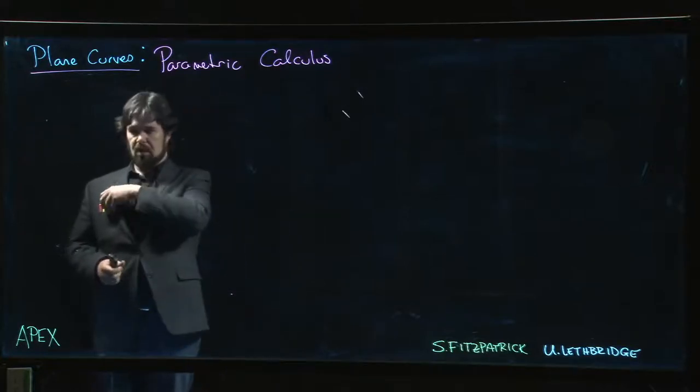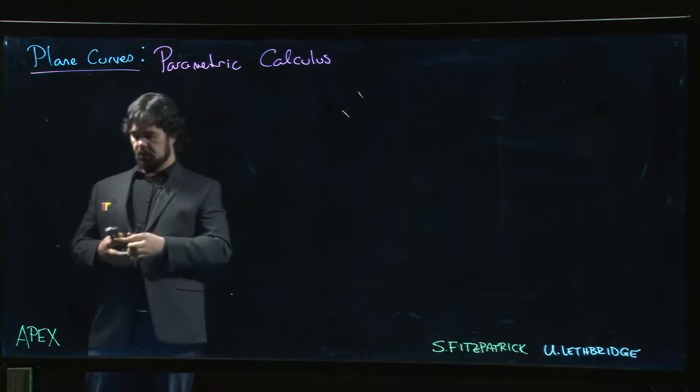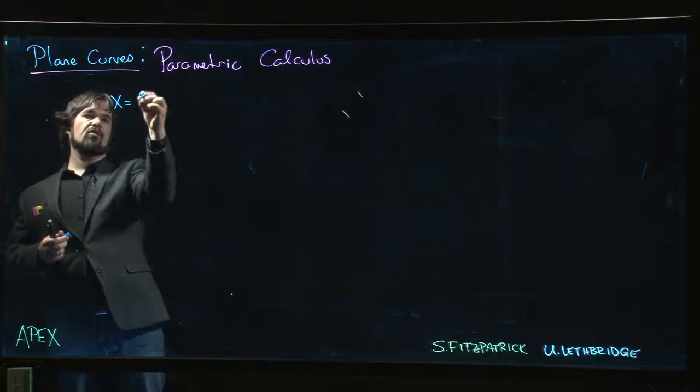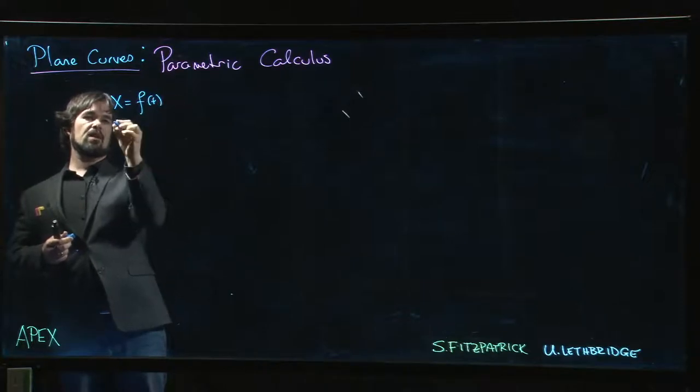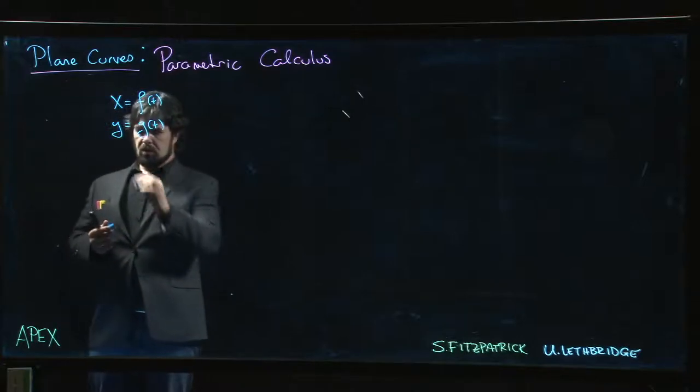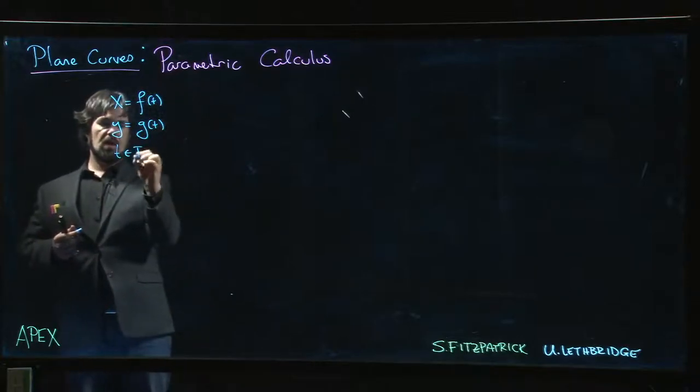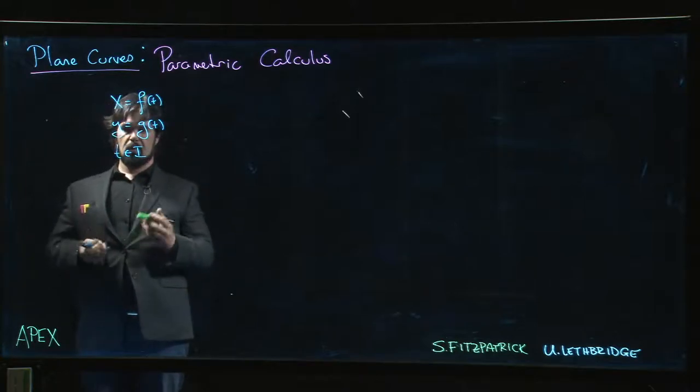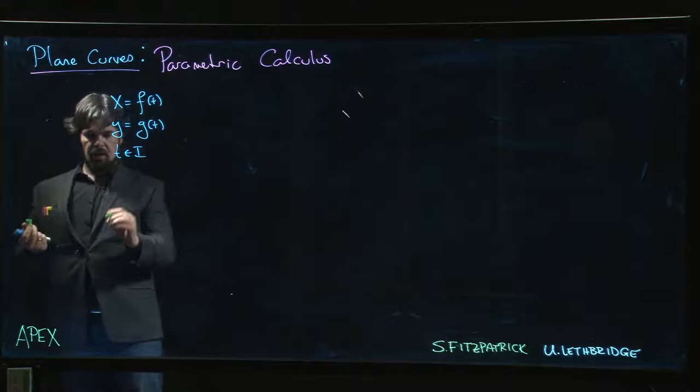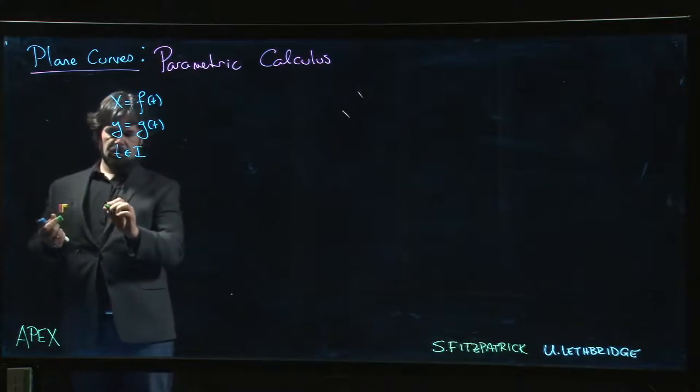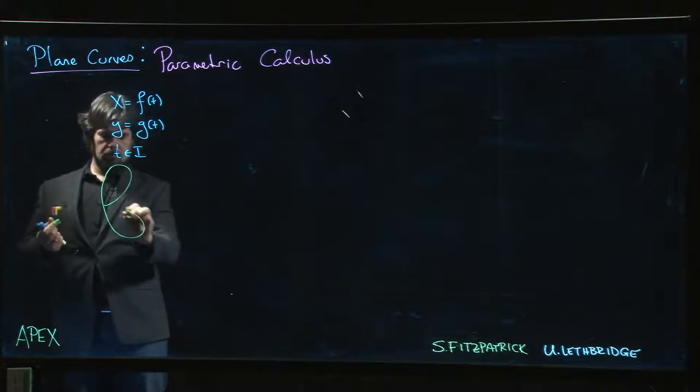We'll start with tangents. So if you've got some curve, maybe you've got some curve where x is some function of t, y is some other function of t, and t belongs to some interval I. So you plot f(t), g(t) for all points in the interval and you get some kind of curve—maybe you get one of these cool spirals or those interesting curves you've probably seen.